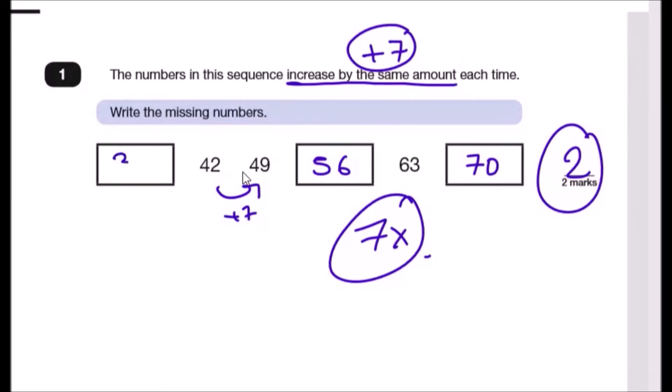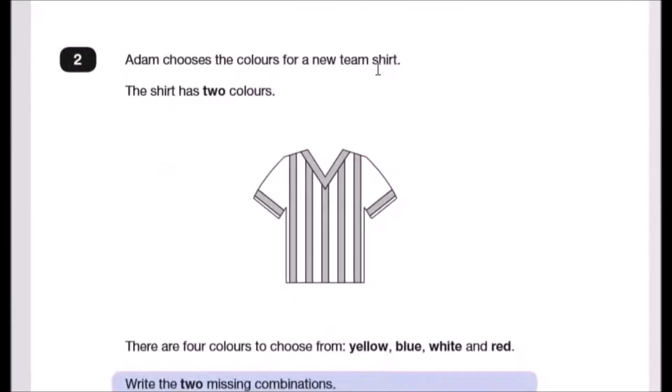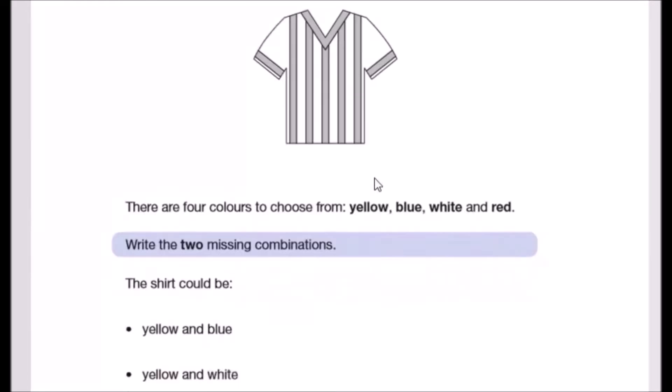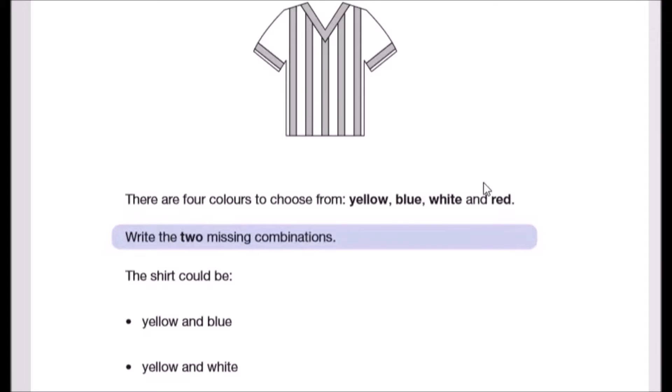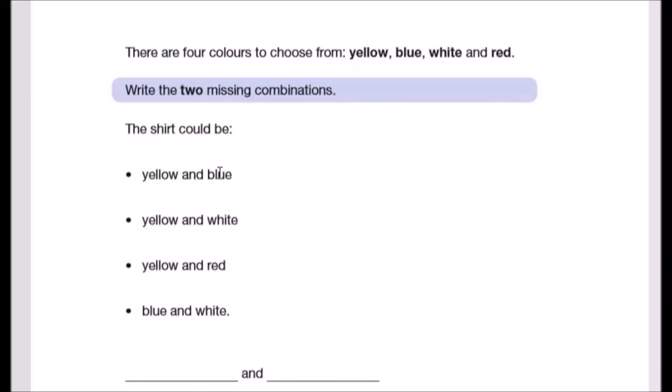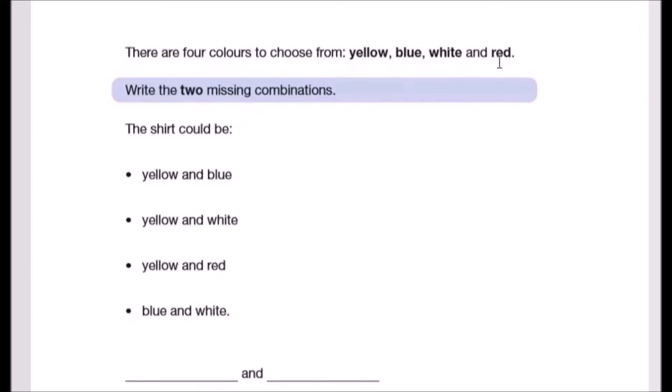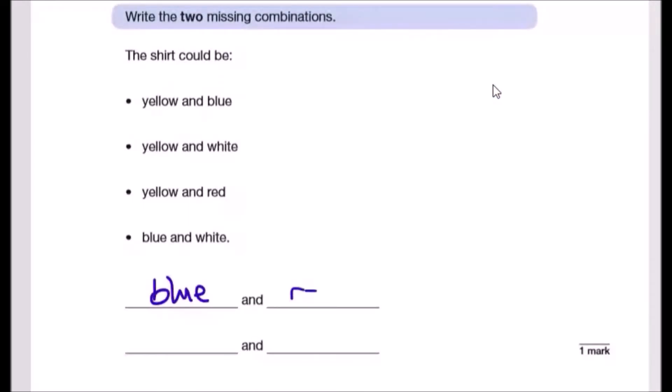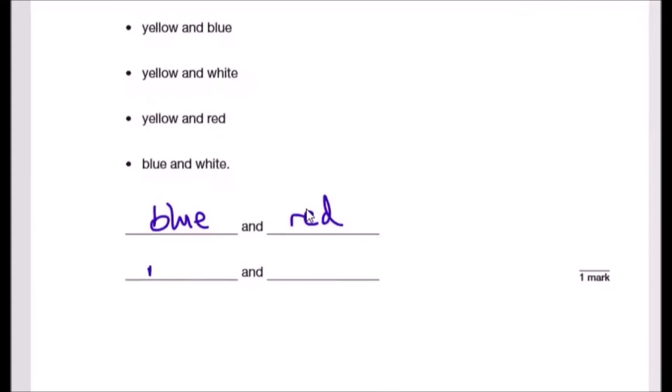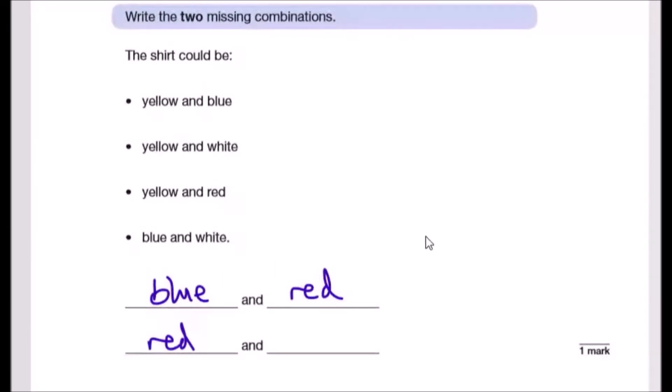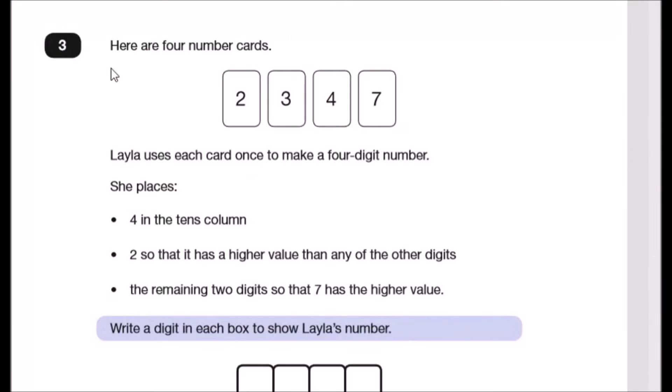Number two: Adam chooses the colors for his new team shirt. The shirt has two colors. There are four colors to choose from: yellow, blue, white, or red. Write the two missing combinations. They start with yellow: yellow-blue, yellow-white, yellow-red, so yellows are done. Blue-white they've got, so they can also do blue and red. Let's write blue and red. Then you move on to red. We've already seen red-yellow and red-blue, so there must be red and white. Put white over here. That's it for combinations.